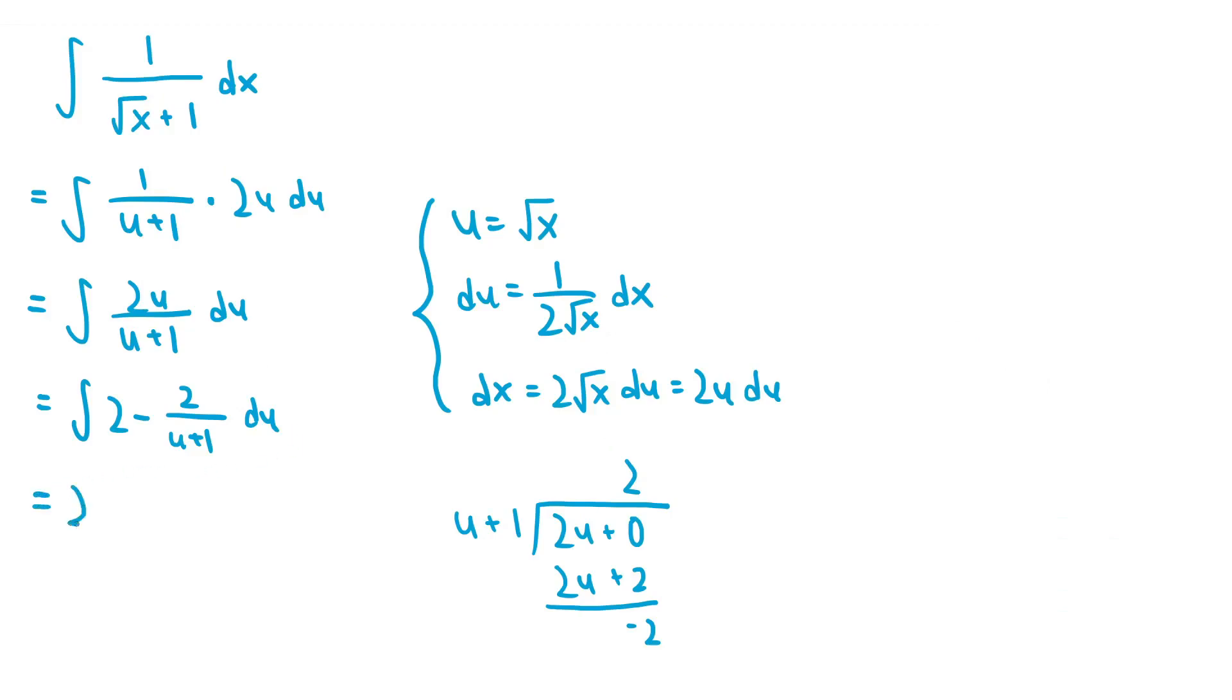The integral of 2 is 2u, and the integral of negative 2 over u plus 1 is negative 2 times ln of the absolute value of u plus 1, and then plus some constant c.